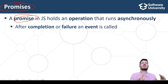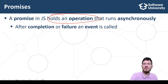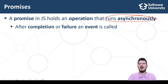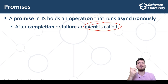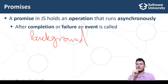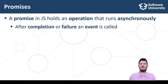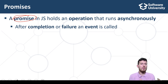Without promises you cannot execute asynchronous tasks like downloading a resource from the server. A promise in JavaScript holds an operation that runs asynchronously. After completion or failure of the operation, an event is called — the operation behind the promise runs in the background. Some functions like fetching a resource do not return the result directly but return a promise: a commitment to execute the requested operation in the background and return the result later.